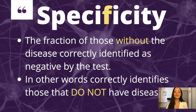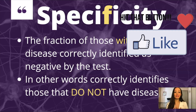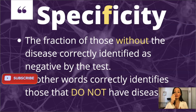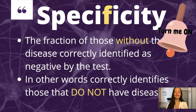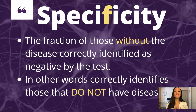Specificity is the fraction of those without the disease correctly identified as negative by the test. So basically: I don't have coronavirus, I'm tested for coronavirus, and I test negative. That's how specific it is. In other words, it correctly identifies those that do not have the disease.